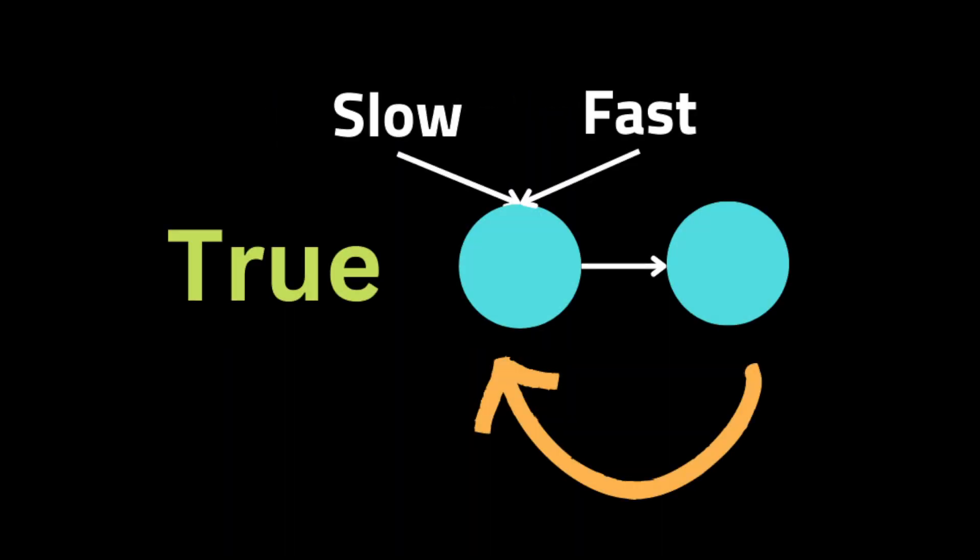If there is a cycle in the list, the fast pointer will eventually catch up to the slow pointer and they will both point to the same node. Otherwise, if there is no cycle, the fast pointer will reach the end of the list.